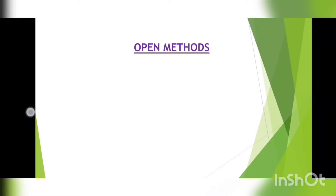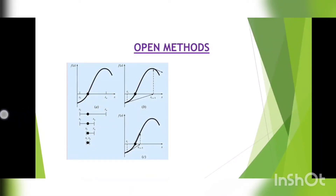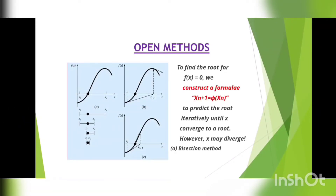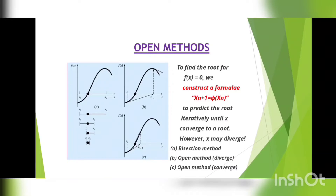In scientific and engineering studies, there are frequently occurring problems to find the root of equations of the form f(x) = 0. We construct a formula x(n+1) = φ(xn) to predict the root iteratively until x converges to a root. However, x may diverge.